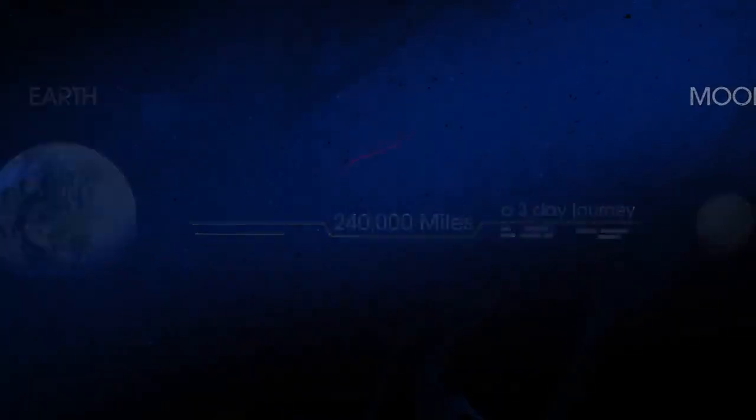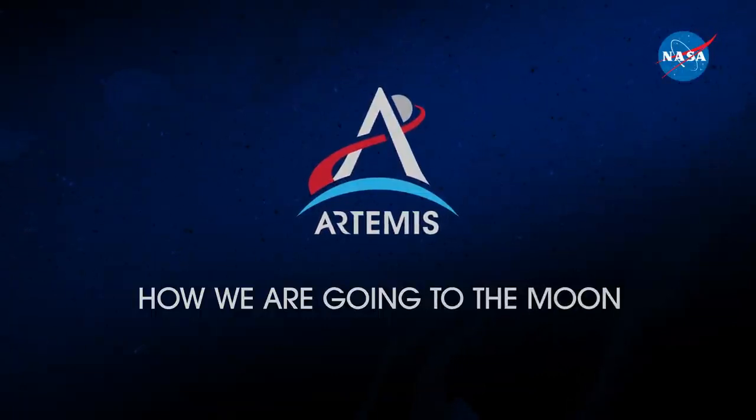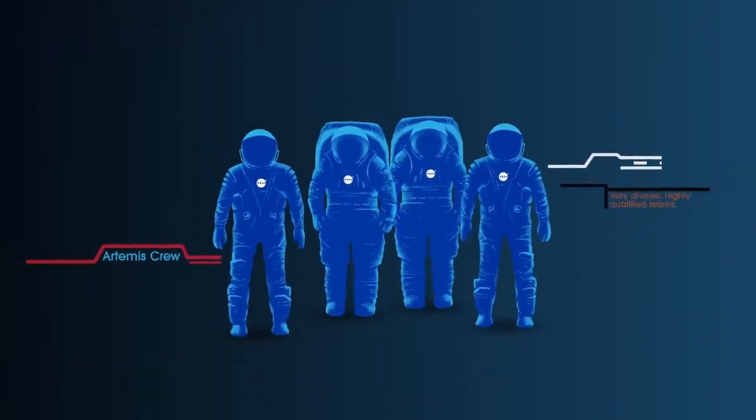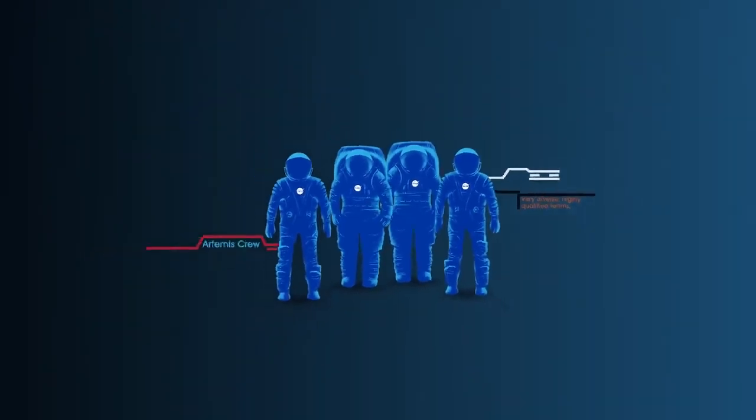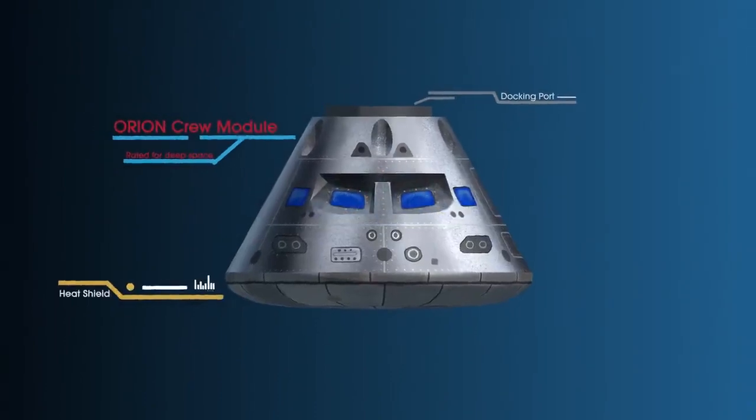So, what will an Artemis mission look like? Everything is designed and tested with our most important element in mind, the astronauts. This is their deep-space, human-rated spacecraft called Orion, built in three parts.